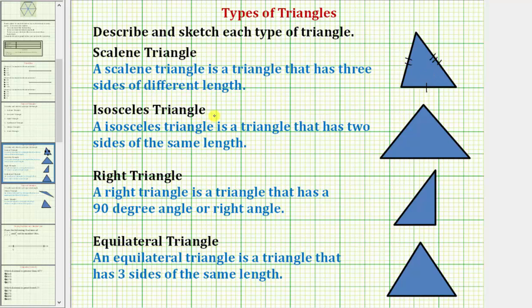An isosceles triangle is a triangle that has two sides of the same length. Here's a picture of an isosceles triangle — this side and this side have the same length. Using tick marks, we put one tick mark on each of these two equal sides, indicating they have the same length. Because the third side can have a different length, we use two tick marks to indicate it does not have to match the other two to be an isosceles triangle.